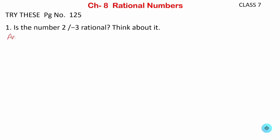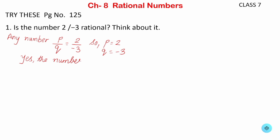Any number which is represented in the form of p upon q is a rational number. So here we have the number 2 upon minus 3, so our p will be 2 and q will be minus 3. So the answer will be yes — the number 2 upon minus 3 is rational. It is very simple.